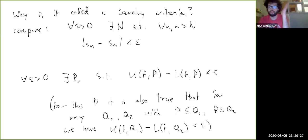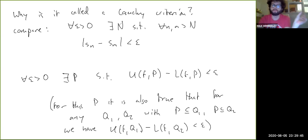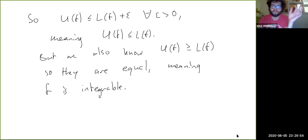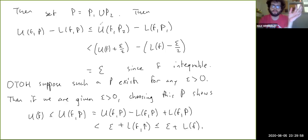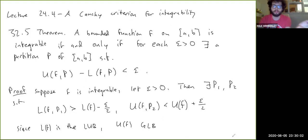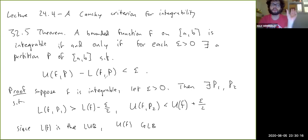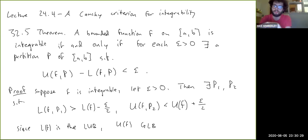Capital P is kind of like a threshold — any pair of partitions finer than capital P will have upper and lower sums close to each other. In the Cauchy sequence analogy, any pair of terms beyond capital N are close to each other. One important thing: there's no reference to the actual values of U(f) or L(f) in the statement of 32.5. You don't have to know what U(f) or L(f) are — you can just show that U(f,P) and L(f,P) get arbitrarily close to each other and conclude integrability, even without knowing the limiting value. That's why it's a Cauchy criterion.